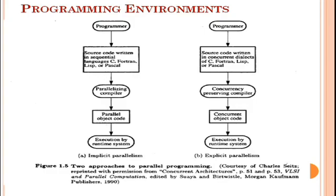There are two types of parallelism: implicit and explicit. The implicit approach uses conventional languages such as C, C++, Fortran, or Pascal to write source programs. The sequentially coded source program is then translated into parallel object code by a parallelizing compiler, which must detect parallelism and assign target machine resources. This approach requires less effort on the part of the programmer, but success relies heavily on the intelligence of the parallelizing compiler.